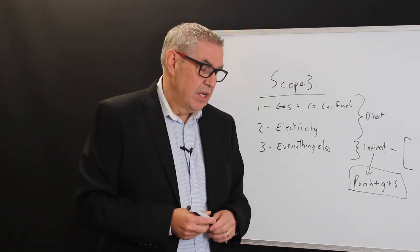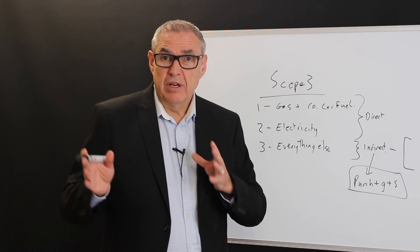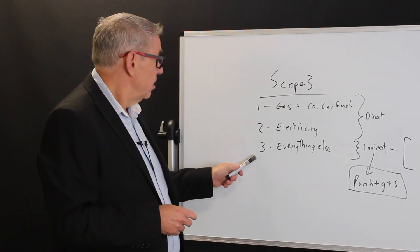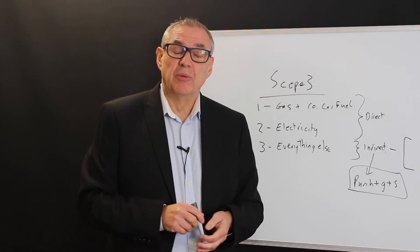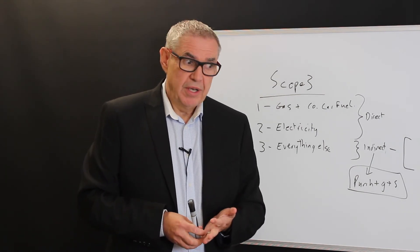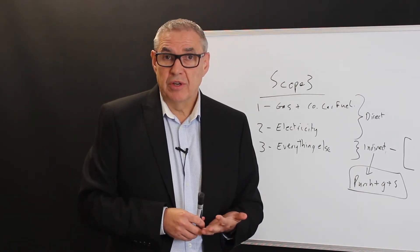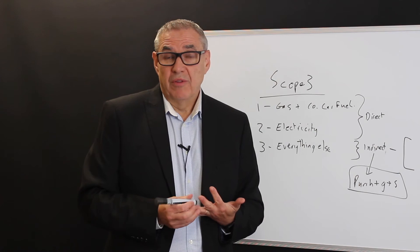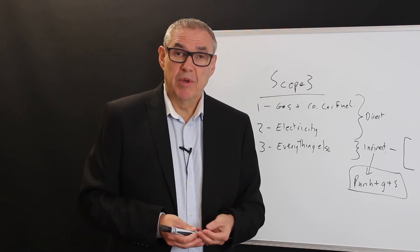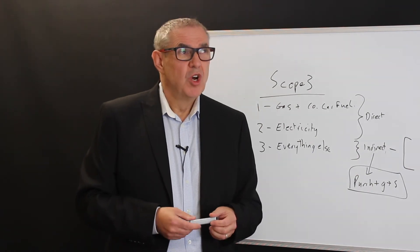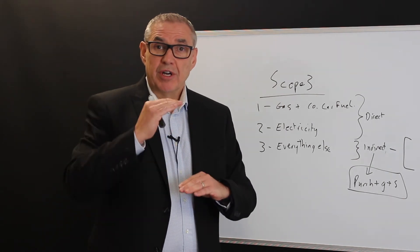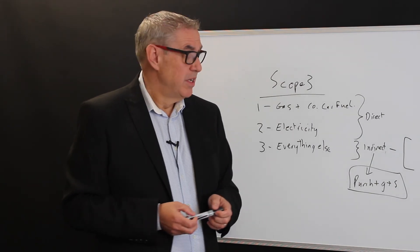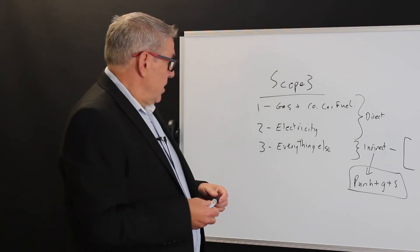Number two: do you need to include scope 3 in SECR and ESOS reporting in the UK? I'm qualified in SECR and ESOS, and currently you do not need to report scope 3 emissions in ESOS and SECR — but that is under review. The ESOS review ongoing in the UK means there's about a 99% chance that as of 2022 and onwards you will have to include scope 3 emissions. SECR is similarly being reviewed, and they are looking at including scope 3 — perhaps just the big ones such as air travel, hotel stays, and raw materials.